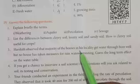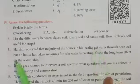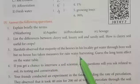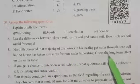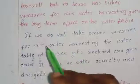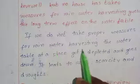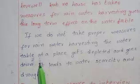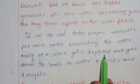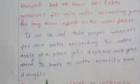Hashid observed that the majority of houses in his locality get water through borewell, but no house has taken measures for rainwater harvesting. What is the long-term effect on the water table? If you do not take proper measures for rainwater harvesting, the water table at a place gets depleted and goes down, leading to water scarcity and droughts.